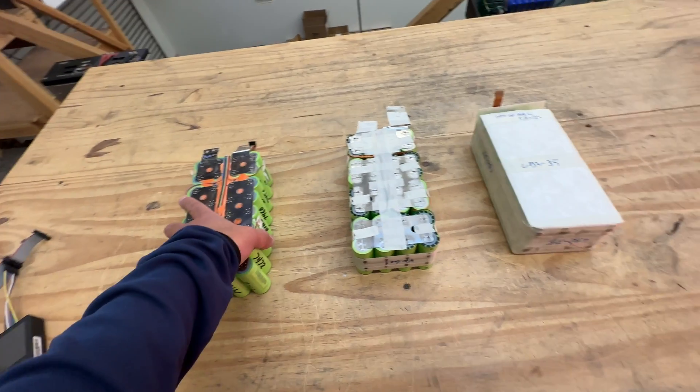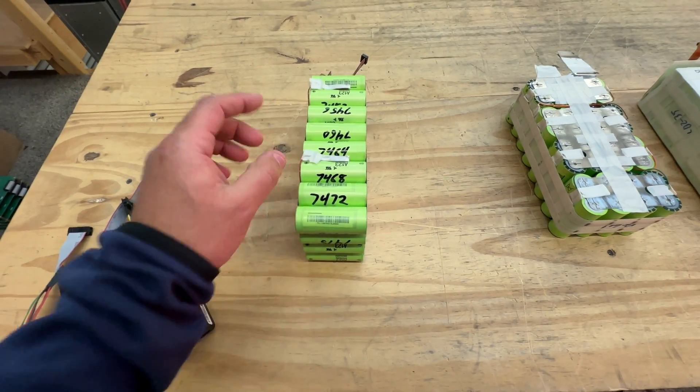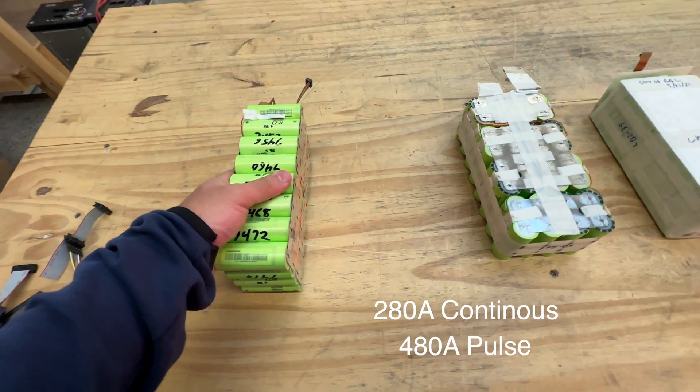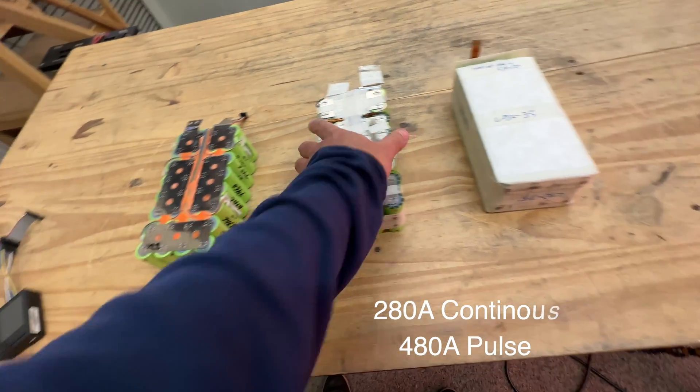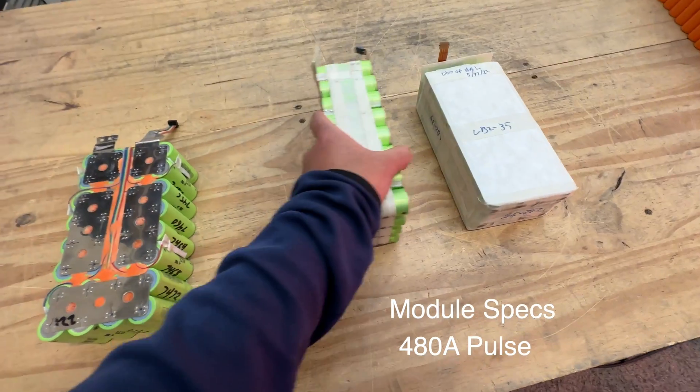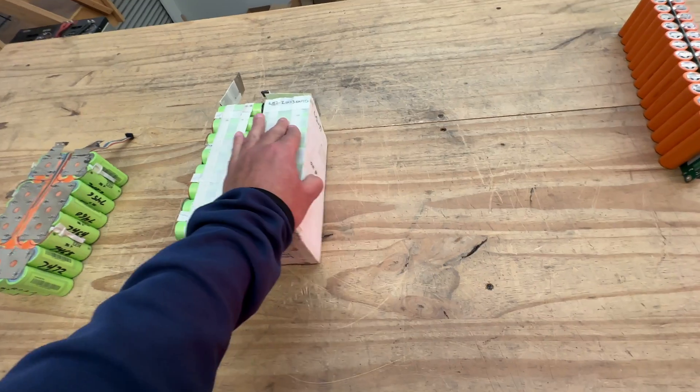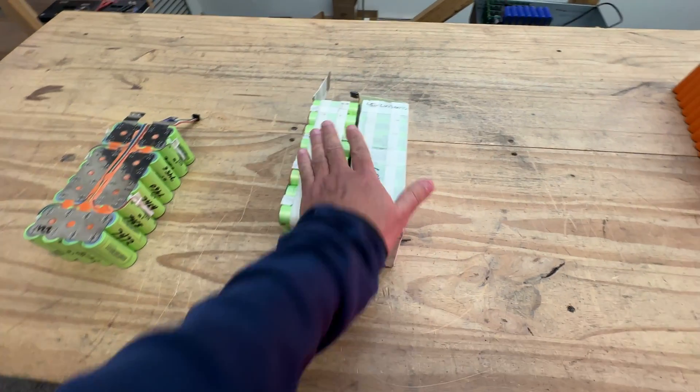So if you're looking into getting some of these very, very powerful A123 cells in a module that's already 24 volts, if you get a few of these working, you very easily make a 48 volt module. There we go. That's 48 volts right there.